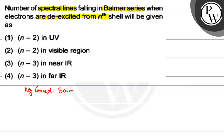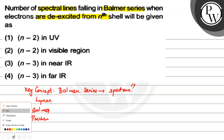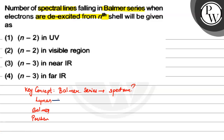We need to know about the spectrum. We have Lyman, Balmer, and Paschen series. In the Lyman series, electrons fall to the first shell — so there are n-1 spectral lines, and this is in the UV region. In the Balmer series, electrons fall to the second shell — so there are n-2 spectral lines, in the visible region.